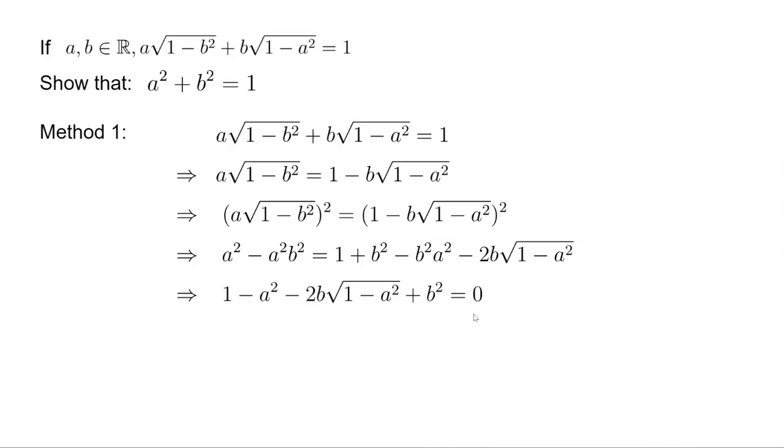Now, if you look closely at this equation, it is actually a perfect square. If we replace square root of 1 minus a squared as x and b as y, this is just x squared minus 2xy plus y squared. So this equals to this.